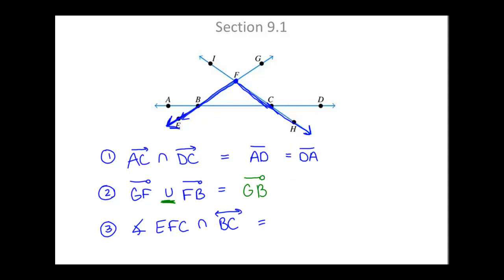We want to intersect that with line BC. Now intersection is what they have in common. So we can see that angle EFC intersects line BC at point B as well as at point C.